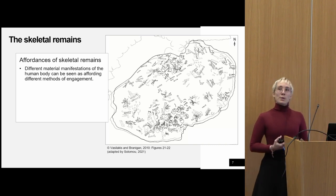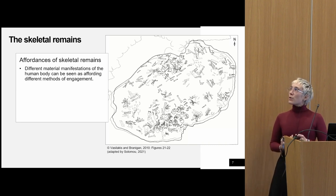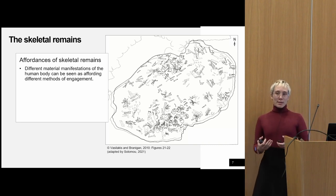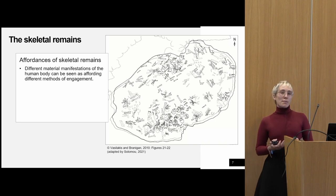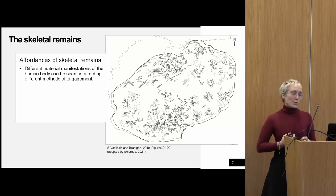For example, the osteological analysis shows that the remains deposited in the Tholos were first left to decompose in open-air conditions — showing how a not-yet-decomposed body afforded a specific method of engagement, being placed somewhere in the open. Then, upon commencement or completion of decomposition, this form of the body afforded a different engagement: being entered into the interior of the tomb.